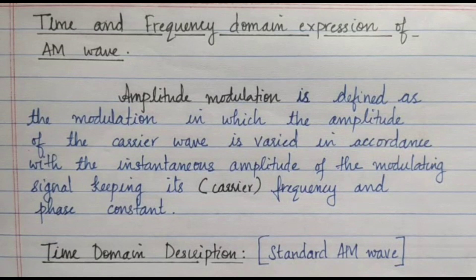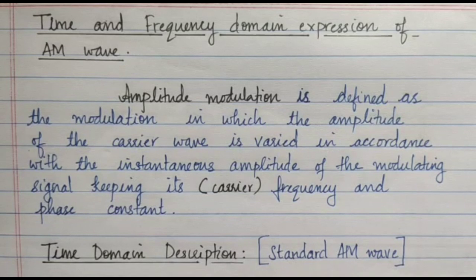In the last video we discussed about modulation and the need for modulation. Amplitude modulation is defined as the modulation in which the amplitude of the carrier wave is varied in accordance with the instantaneous amplitude of the modulating signal, keeping carrier frequency and phase constant.